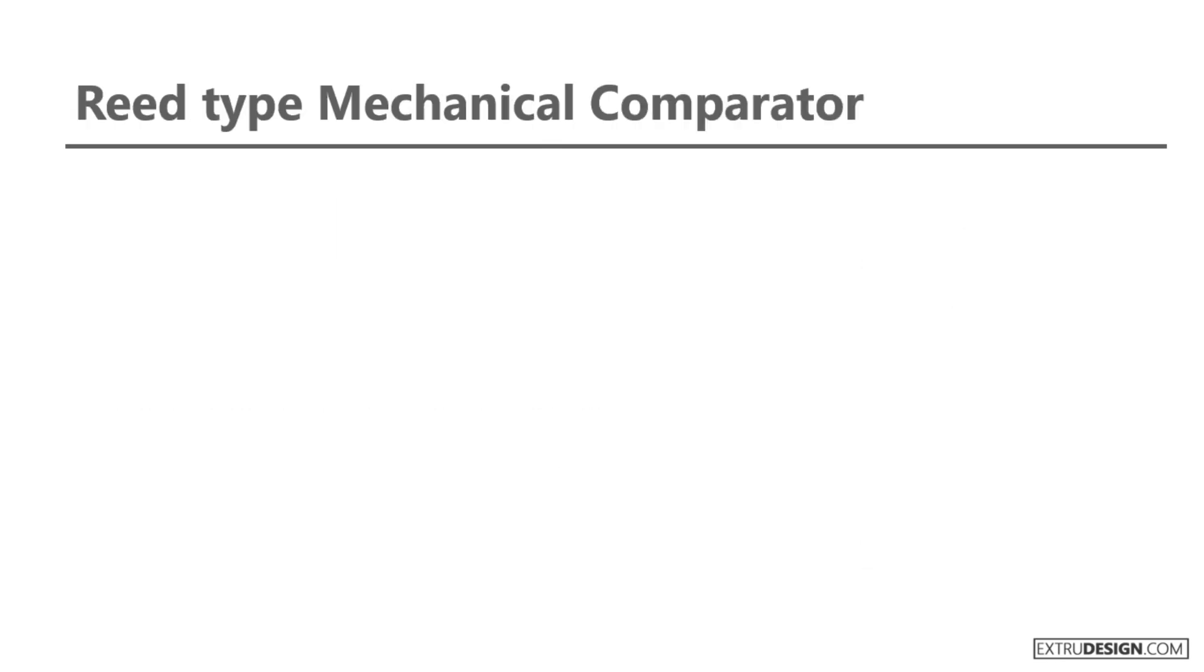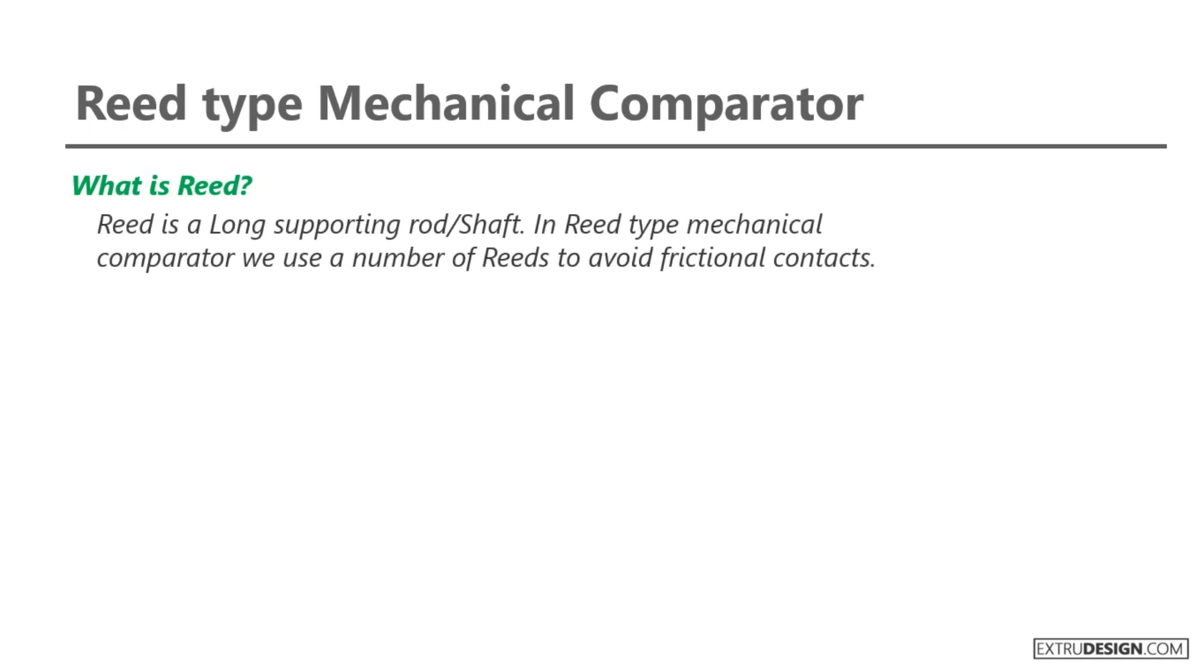The third one is reed type mechanical comparator. What is meant by reed in reed type mechanical comparator? Well, a reed is a long supporting rod or shaft. In reed type mechanical comparator we use a number of reeds to avoid frictional contacts. Check the schematic representation of the reed type mechanical comparator.